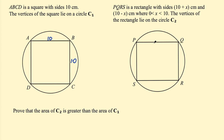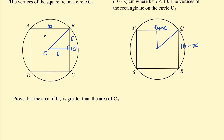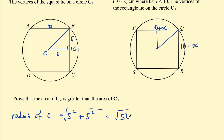The square has area 100. To compare the areas I think it's enough to find the radii of each circle using Pythagoras. For circle C1, each half-side is 5, so the radius of C1 = √(5² + 5²) = √50.